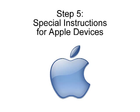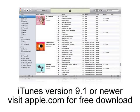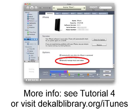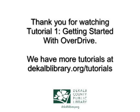Step 5: If you are not transferring to an Apple device, you can ignore this step. If you are transferring to an Apple device, make sure you have version 9.1 or newer of iTunes loaded onto your computer. In addition, set iTunes to enable manually managed music. For more information on how to do this, please see Tutorial 4, Apple Devices in OverDrive, or follow this link for written instructions. Now you are ready to download and listen to audiobooks from OverDrive.